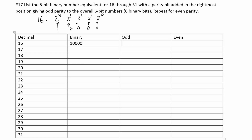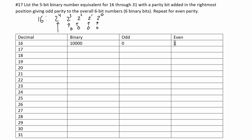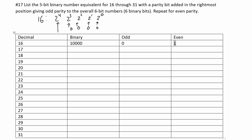Now for odd and even parity: if there is an odd number of ones in our binary form, then we are going to have a 1 for even parity and a 0 for odd parity. We're only looking at the ones in our binary. If we have an odd number of ones, the even parity bit is 1, and the odd parity bit is 0.